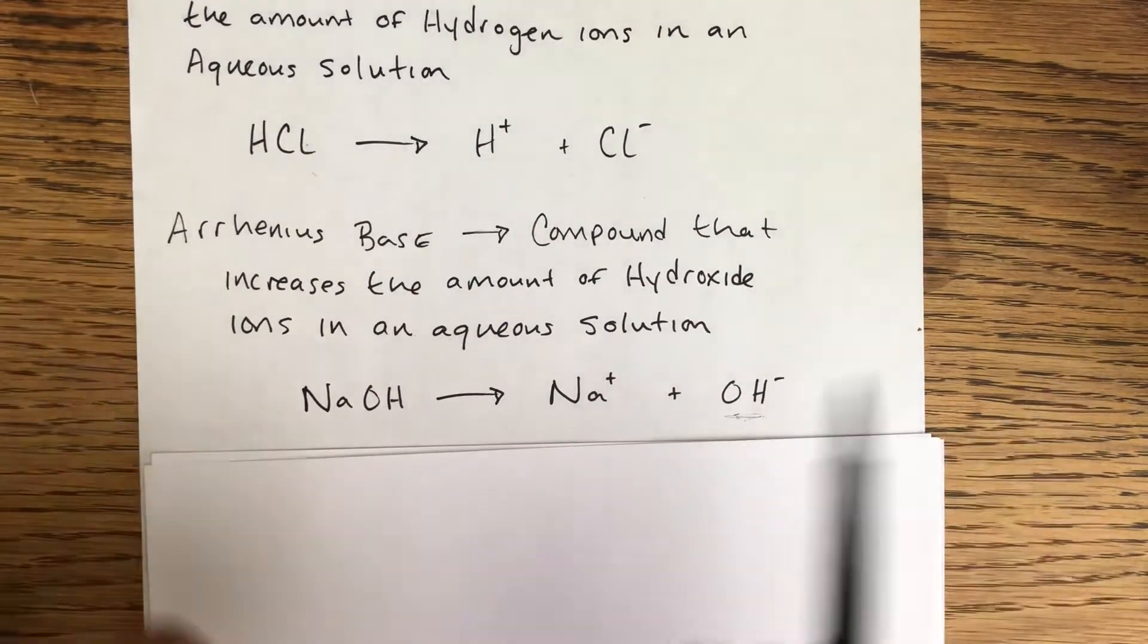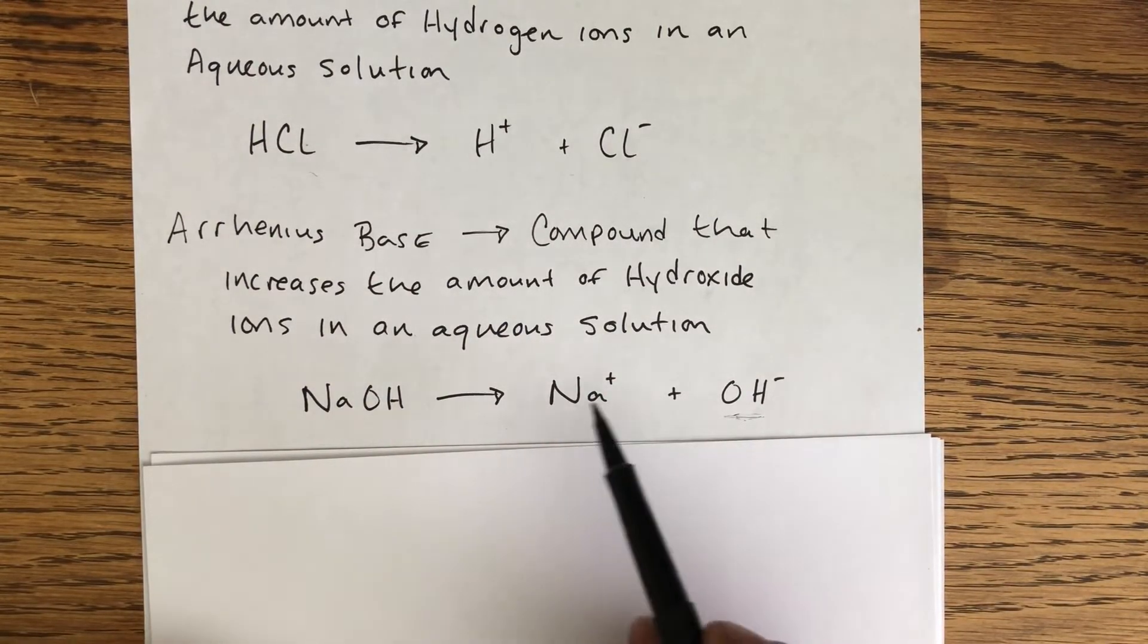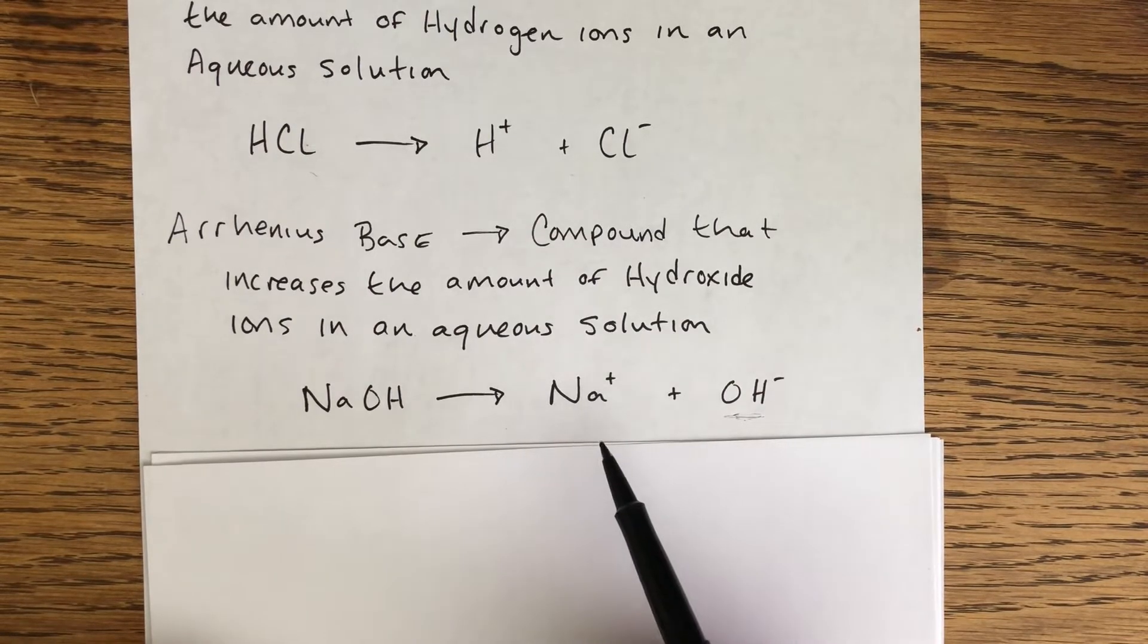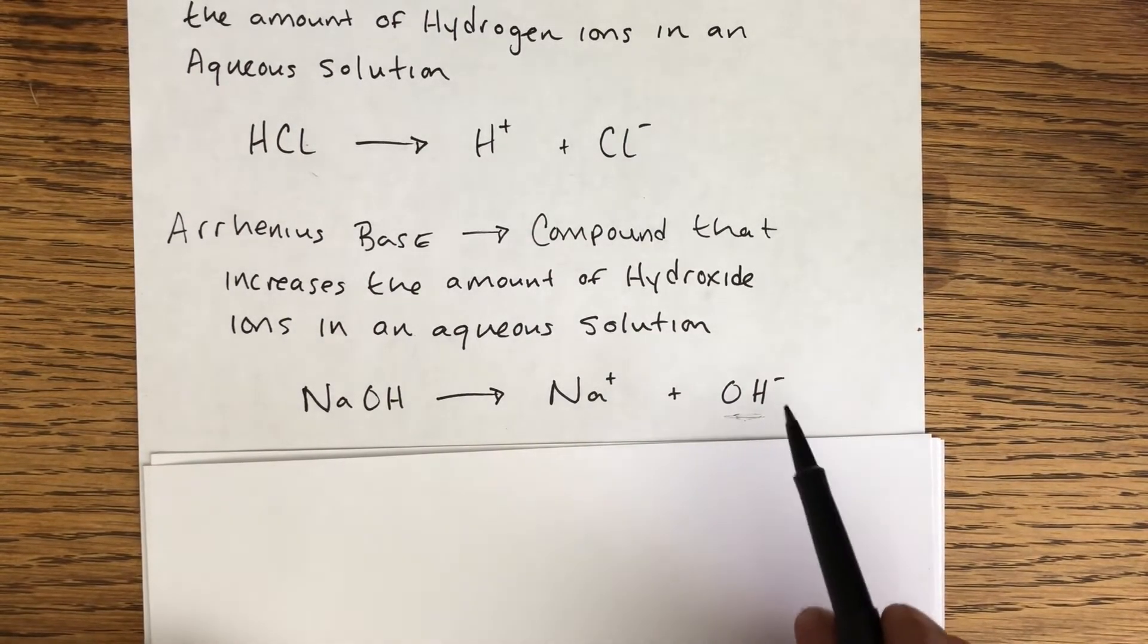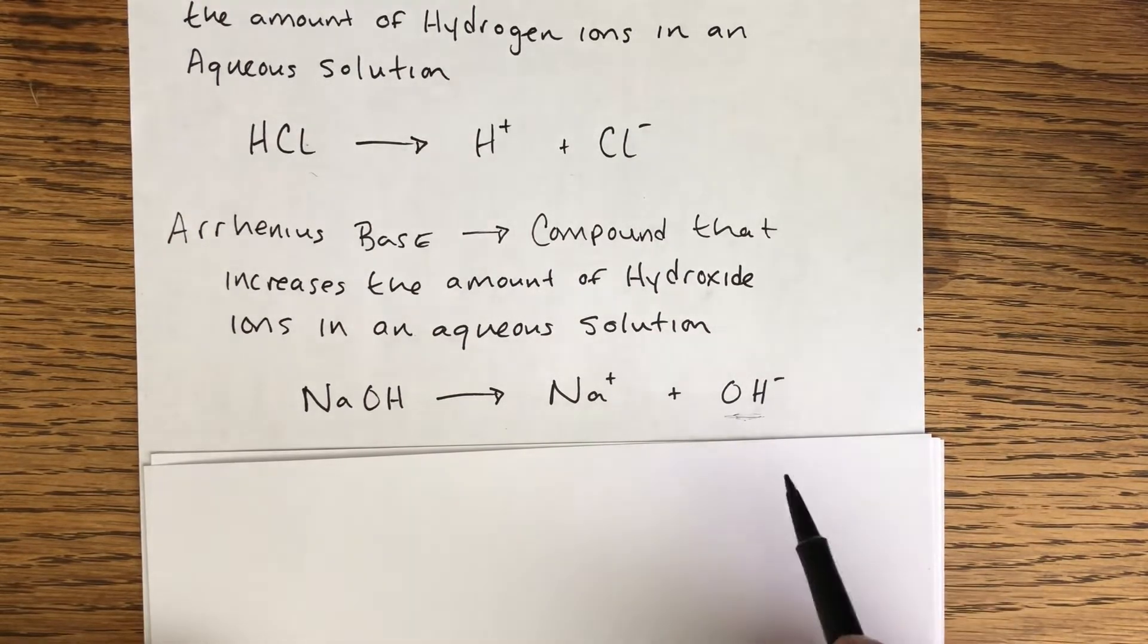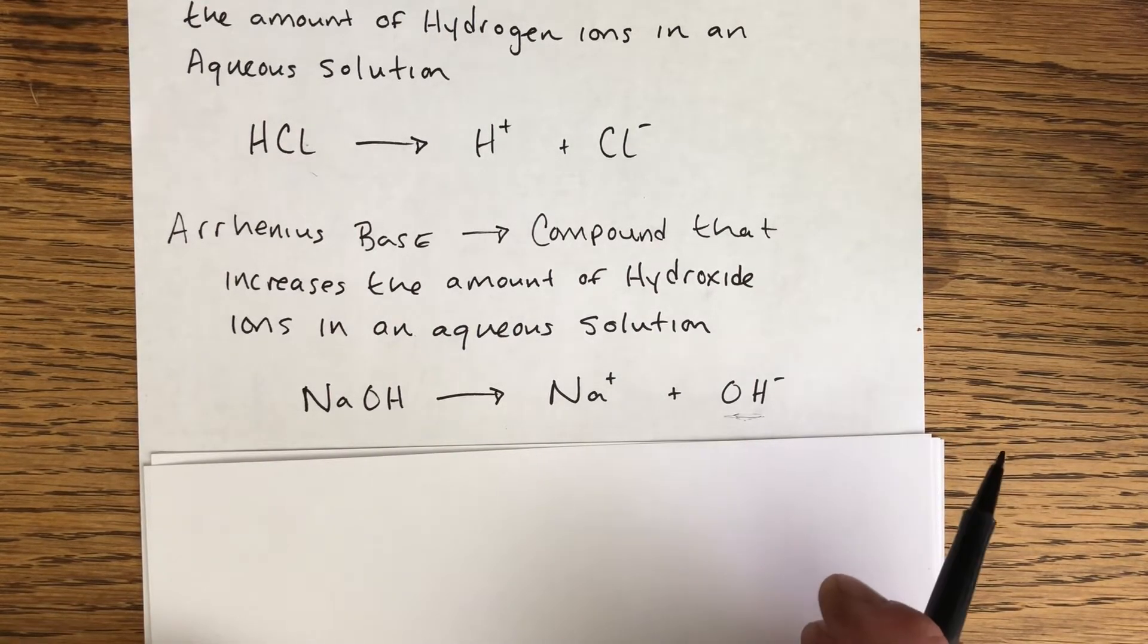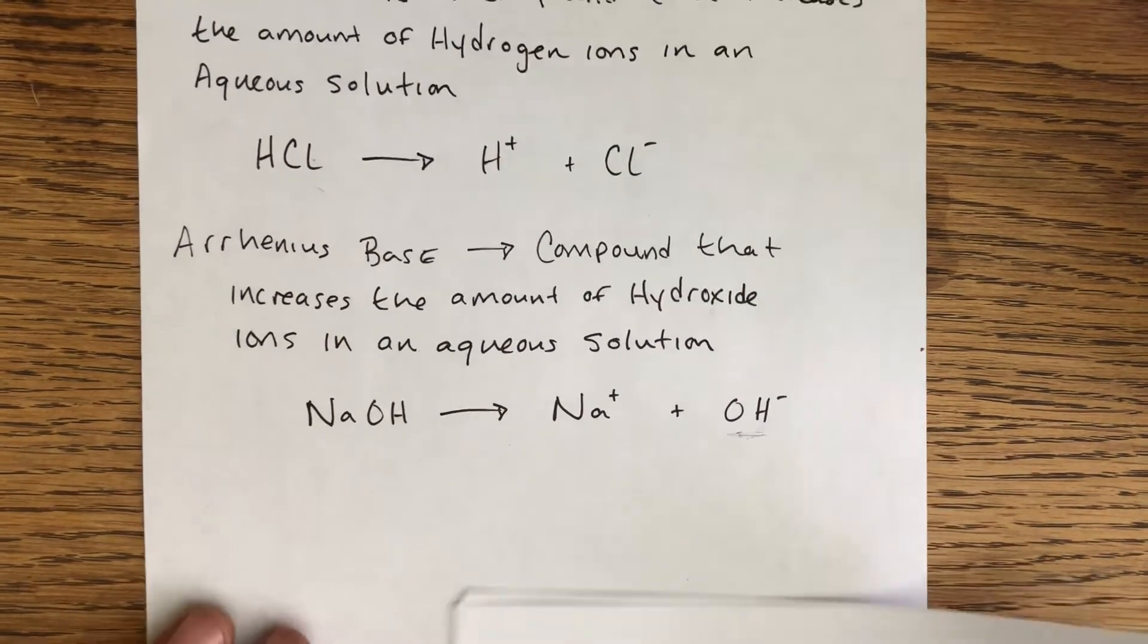We're increasing the concentration of sodium ions, which we don't care that much about, but what we do care about is the fact that there's a bunch of hydroxide ions that are being released into the water. That is what makes an Arrhenius base.